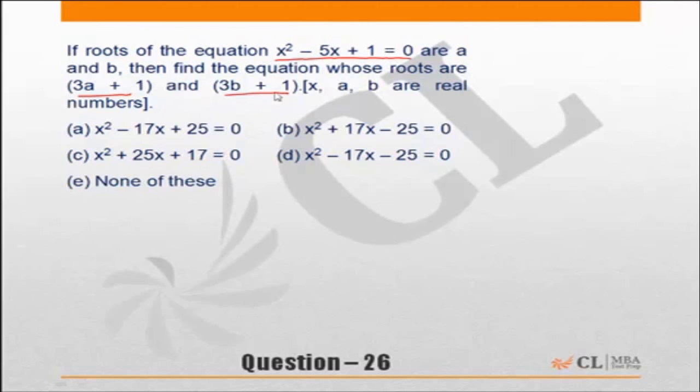While many of you might be tempted to solve the equation, find the roots a and b, then find 3a plus 1 and 3b plus 1 and then find the answer, that might be time consuming because it is not necessary that this will give you straightforward natural numbers as roots. It might be a case wherein the roots are irrational numbers.